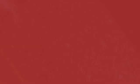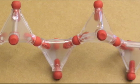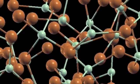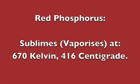Red phosphorus is the other most common allotrope of the element. It is a red powdery solid at room temperature and is much more stable than white phosphorus. The allotrope is formed with tetrahedrons of phosphorus atoms that have had one link taken away and another added to a neighbouring tetrahedron, making an amorphous solid. Red phosphorus sublimes — that is, turns straight to vapour — at 670 kelvin or 416 degrees celsius. Both the white and red forms of phosphorus are insoluble in water.